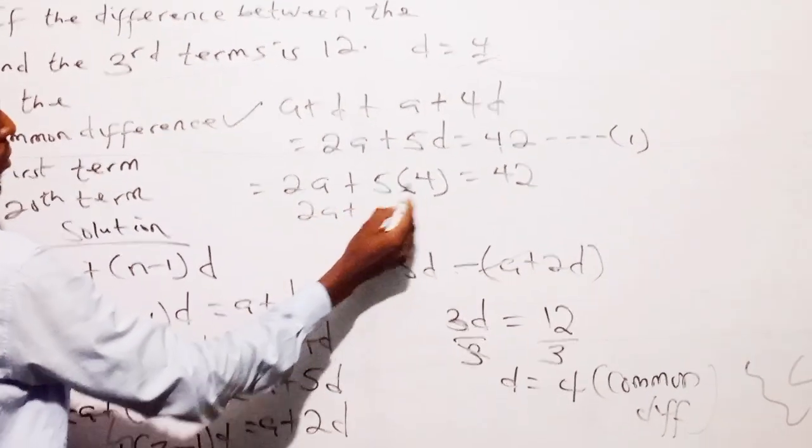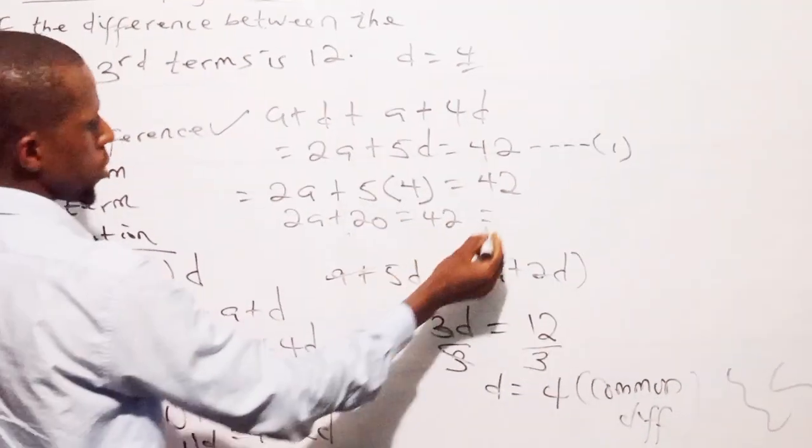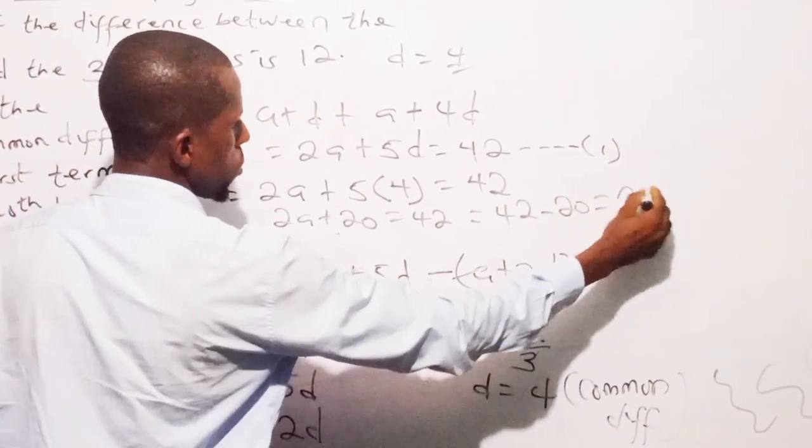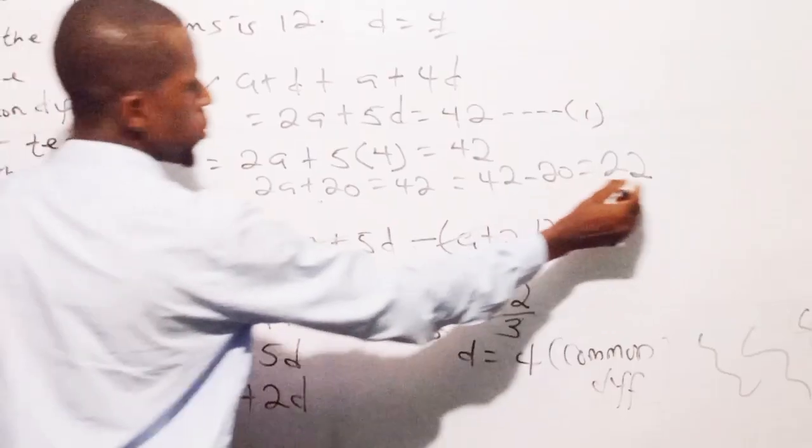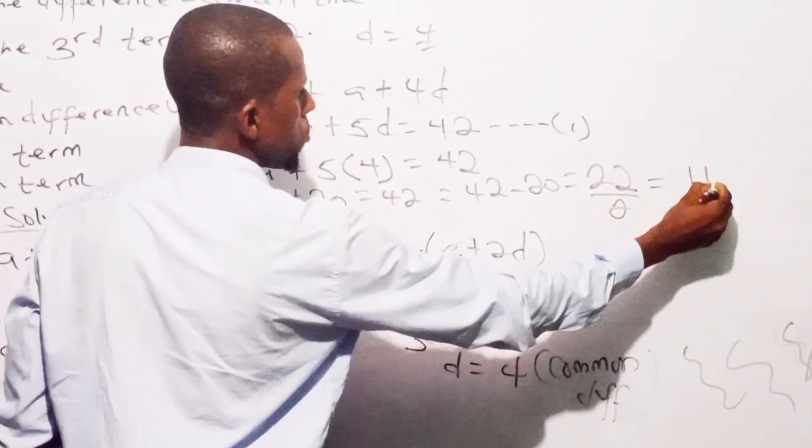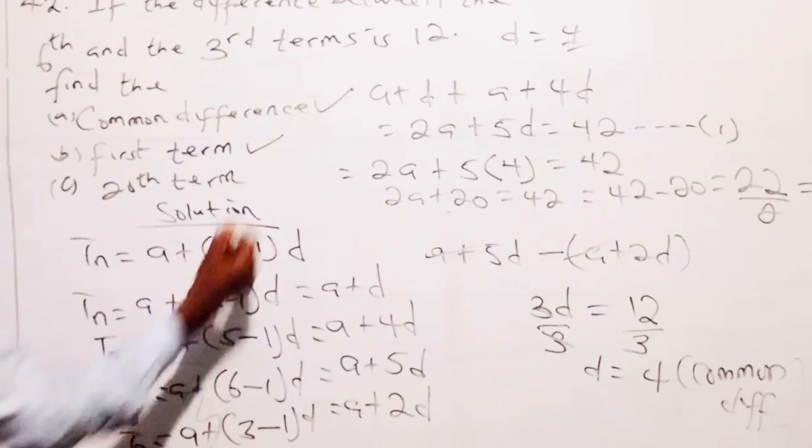So we have 2A plus 5 times 4 is 20, equals to 42. By now you solve this, we have 42 minus 20, that is 22, which is 2A. So we can easily get A by dividing by 2. So we have 11, which is our first term. So our first term stands for 11.